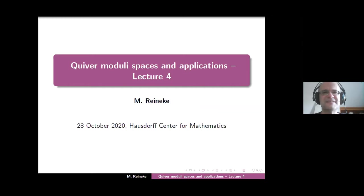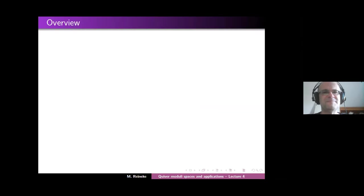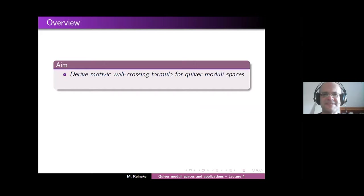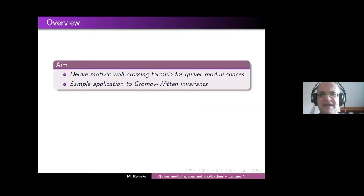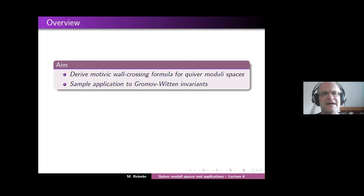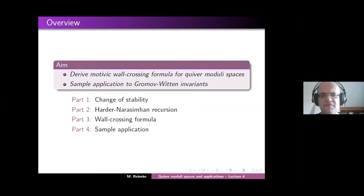All right, here we go. So our aim today: the first aim is to derive the so-called motivic wall-crossing formula for quiver moduli spaces. And then I would like to give you a sample application to Gromov-Witten invariants. So that's the overview over the content of the talk.